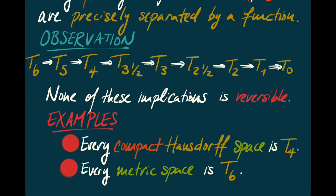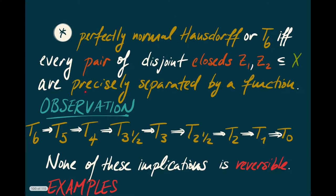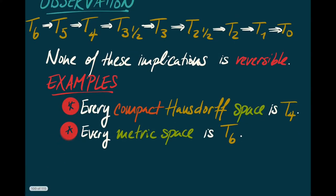What are the key examples? First, every compact Hausdorff space is T4 — disjoint closed subspaces of a compact Hausdorff space are themselves compact, and inside a compact Hausdorff space you can always find disjoint open neighborhoods separating two compacta. Another observation: all of these axioms, T0 through T6, are enjoyed by metric spaces. As soon as you have a distance function, you can construct a function that will precisely separate any two closed subsets, so any metric space is T6, and therefore Ti for i ≤ 6.